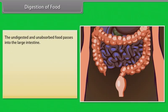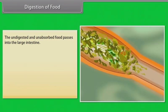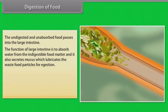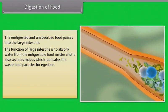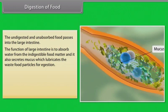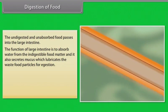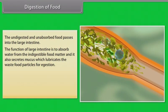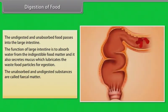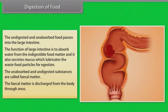The undigested and unabsorbed food passes into the large intestine, whose function is to absorb water from the indigestible food matter. It also secretes mucus to lubricate the waste food particles for ejection. The unabsorbed and undigested substances, called faecal matter, are discharged from the body through the anus.